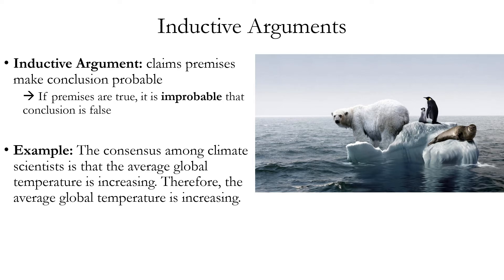Here's an example. The consensus among climate scientists is that the average global temperature is increasing. Therefore, the average global temperature is increasing. This is an inductive argument. We can see this because the premise does make the conclusion probable — this is a strong inductive argument — but it is not a valid deductive argument. It's still possible for the conclusion to be false even if the premise is true. Consensus among scientists is generally a good reason to believe something, but scientists are not infallible; it's logically possible that they can get something wrong, and in fact this is often how science progresses. However, in this case, it is probably true with a high degree of probability that global temperature is increasing.